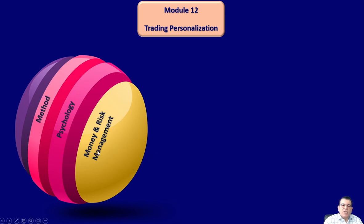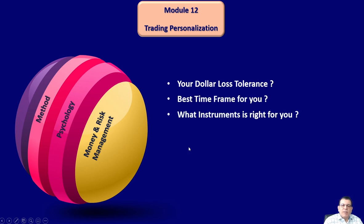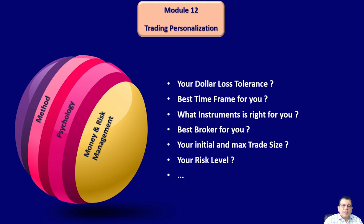So to become a professional trader, in this module you have to understand all variables that come from the method, psychology, and money and risk management. These variables — such as dollar loss tolerance, timeframe, instrument, broker, and trade size — are all important in your trading success. You have to understand them in theory so we can help you know yourself and find what is best for you, so you can become a consistent trader in real market. Thanks for your attention, and we will discuss these in detail during the next lessons.